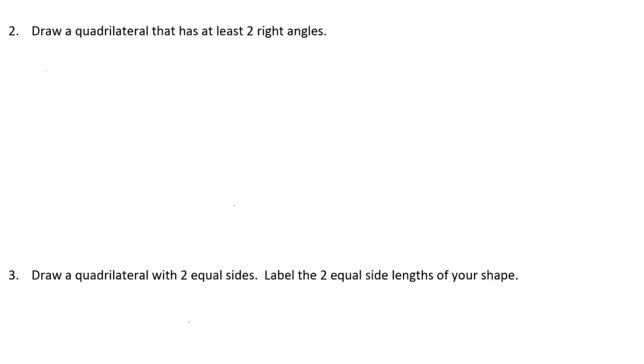And now a quadrilateral that has at least two right angles. So what I'm going to use is, I'm actually using the end of my ruler, and I'm just tracing around the outside of the end of my ruler. And that's going to give me a square, a right angle there.